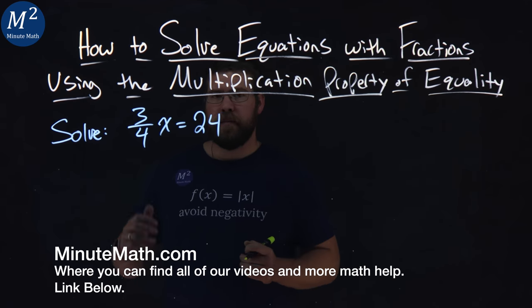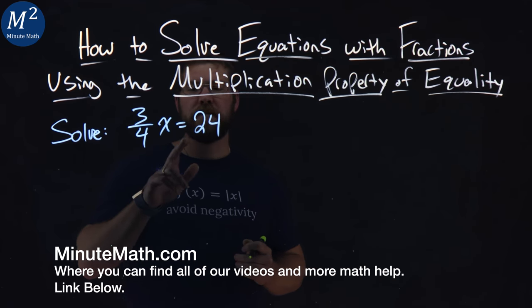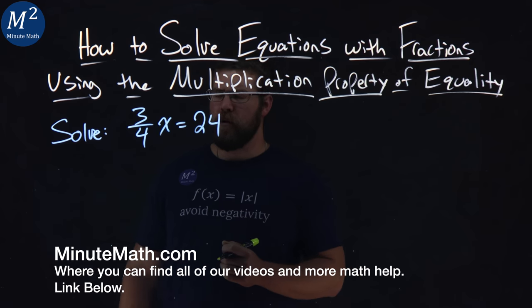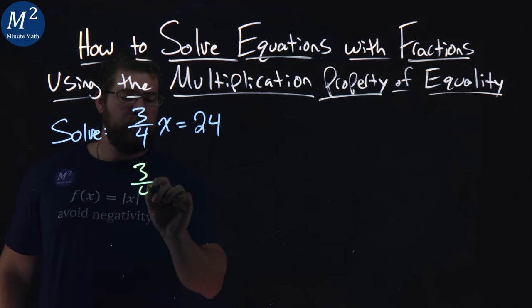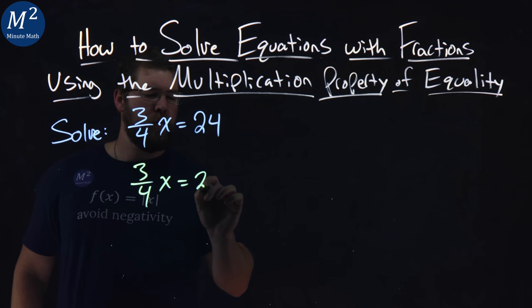We're given this problem right here. Solve 3/4x equals 24. Well, to do this, I'm going to first rewrite my equation: 3/4 times x equals 24.